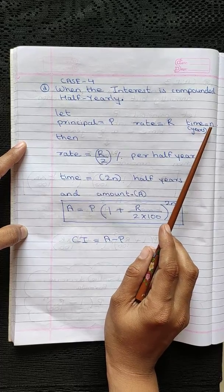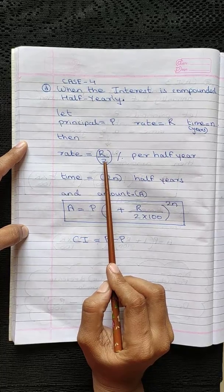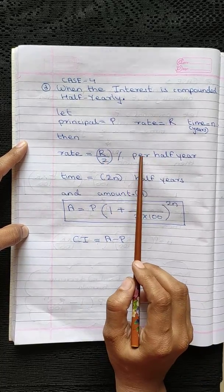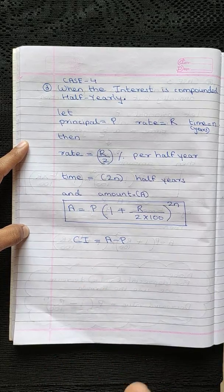Then the rate of interest will become R upon 2 per half year because we are calculating the compound interest twice in a year.